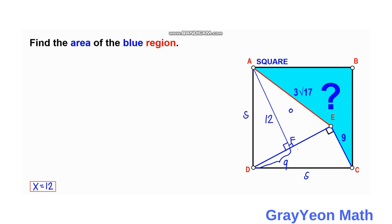So this is 3. So next is we can already find the area of the blue region by using this, by focusing on this triangle AFD.